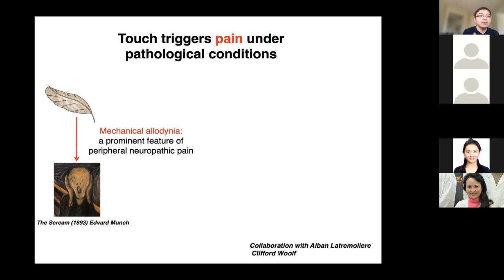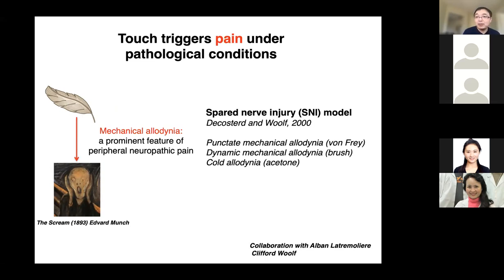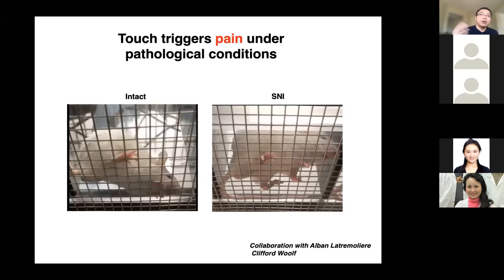Touch definitely plays a very important role in our daily life. However, under certain pathological conditions, touch can trigger robust pain — named mechanical allodynia — a prominent feature of peripheral neuropathic pain. To mimic this condition, we collaborated with Dr. Clifford Woolf's lab and introduced a well-established model called spared nerve injury (SNI). In this model, two branches of the sciatic nerve are ligated and crushed while the third branch, the sural nerve, is left intact, and the mice with SNI develop different forms of allodynia.